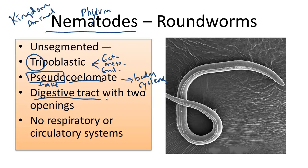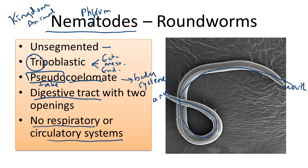Roundworms have a digestive tract with two openings, a mouth and an anus. They have no respiratory or circulatory systems, making them close to one of the most primitive sets of worms, and they are bilaterally symmetrical. Many roundworms are parasitic, meaning they require a host to survive and reproduce.